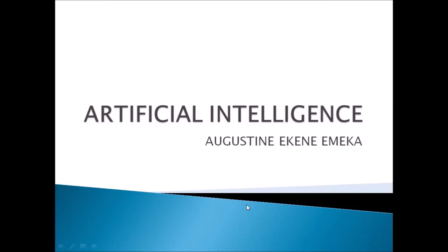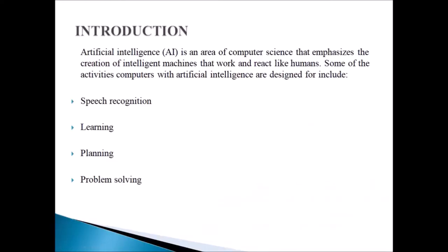Artificial intelligence is an area of computer science that emphasizes the creation of intelligent machines that work and react like humans. Basically, what you learn in artificial intelligence is how to make machines behave like human beings. Some activities computers with AI are designed for include speech recognition, learning, planning, and problem solving.